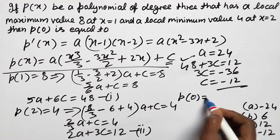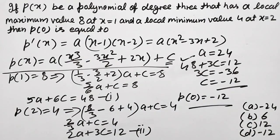Means P(0) equal just C, and C equal minus 12. This means P(0) equal minus 12. Option D is correct.